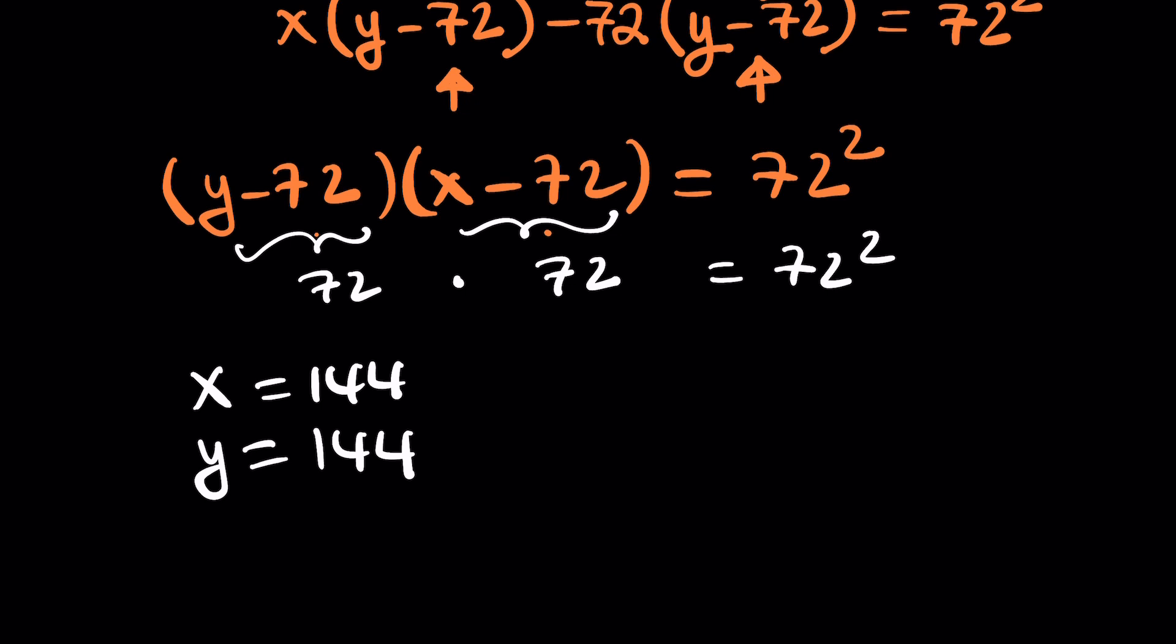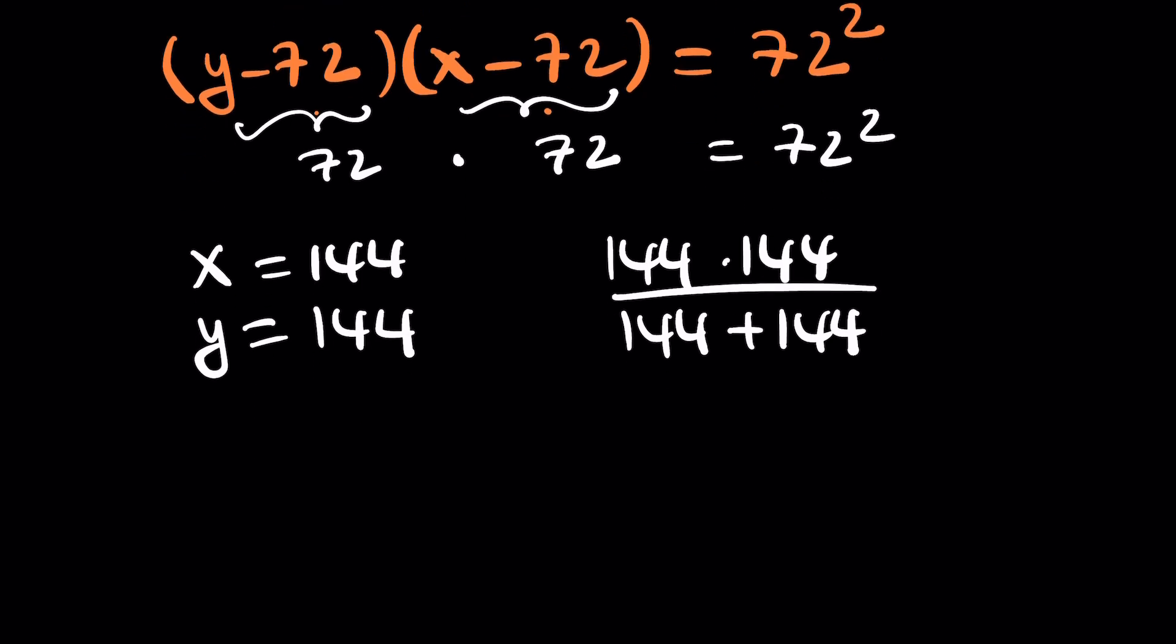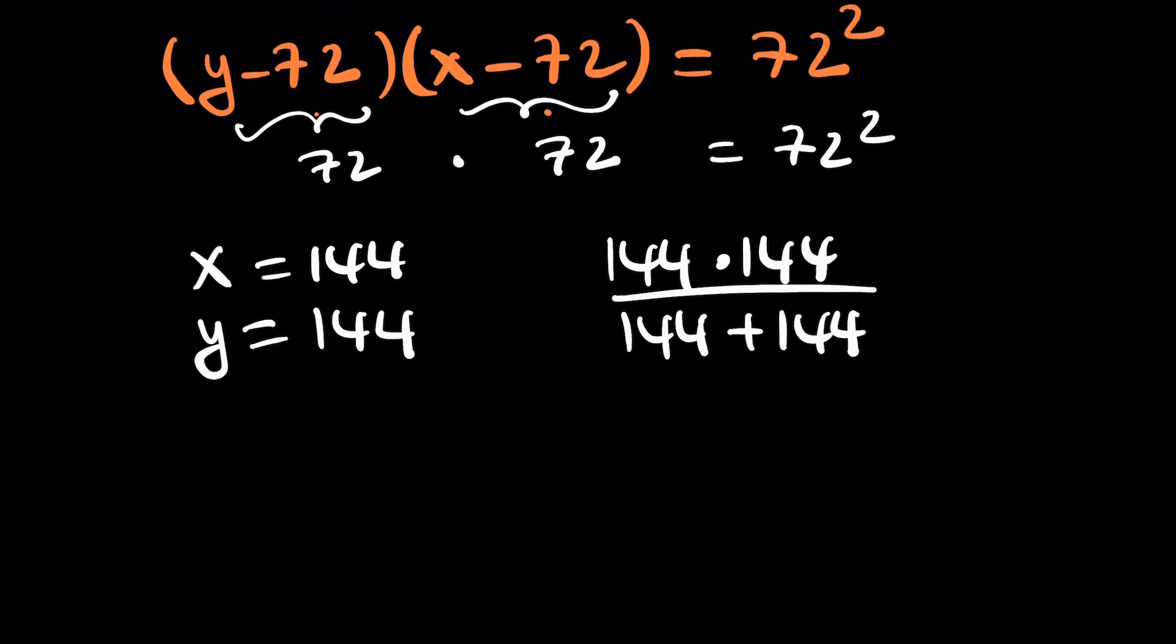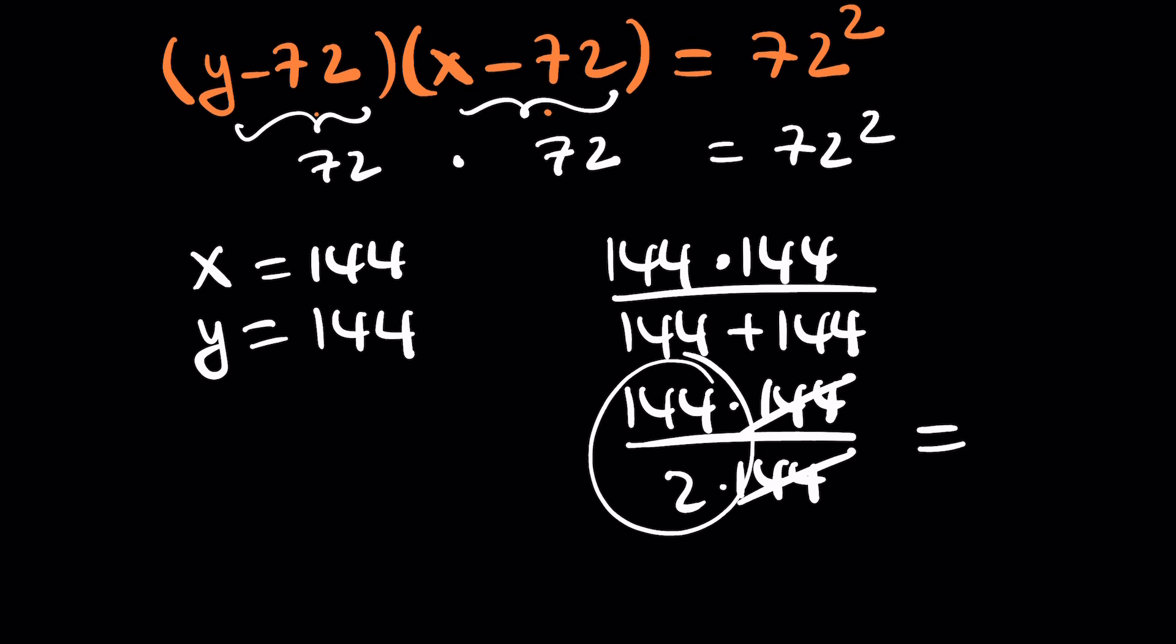If you take 144 and multiply it by itself and then in the denominator you add them, is this actually going to equal 72? Let's find out. The denominator can be written as two times 144 because you're adding the same thing twice. 144 cancels out one of them and this becomes 72.